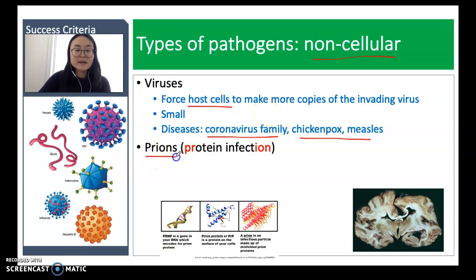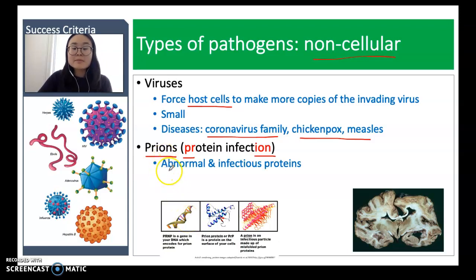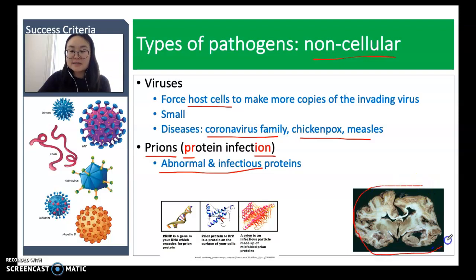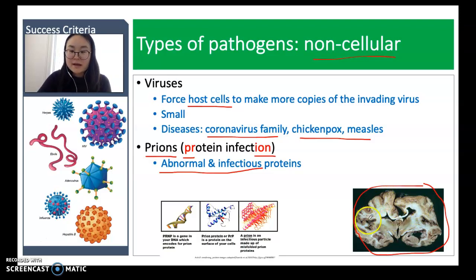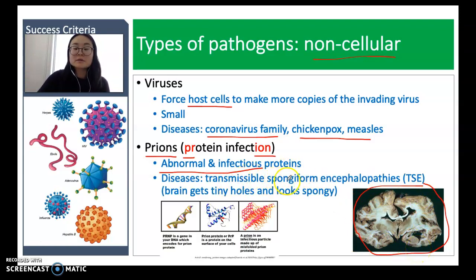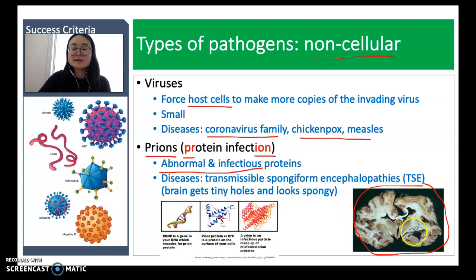Prions might be a new one for you. 'Prion' stands for protein infection — 'pr' from protein, 'ion' from infection. These are abnormal and infectious proteins. It's normal to have proteins in your body, but these are abnormal and infectious, and they can cause disease. Looking at this cross-section of brain tissue, you can see little holes — caused by these protein infections. This is a very rare disease called transmissible spongiform encephalopathies, a group of diseases where the brain develops tiny holes and looks spongy.